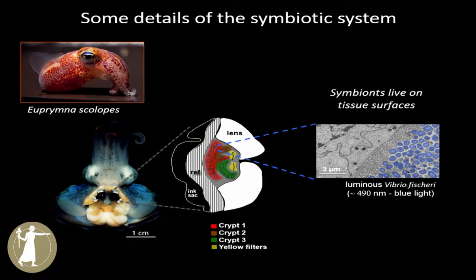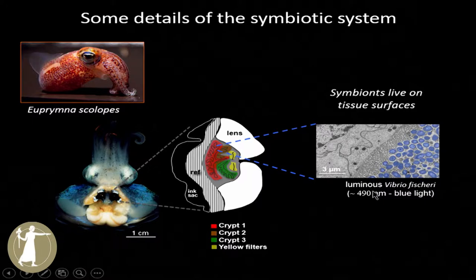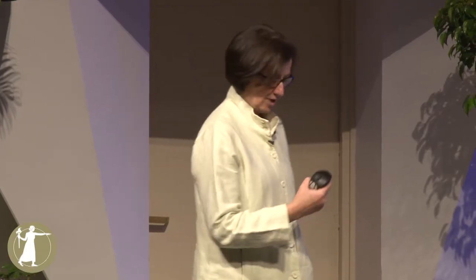These are the main stars of the show: Euprymna scolopes and its partner, Vibrio fisheri. Some details of this spectacular symbiosis — if you were to do a ventral dissection, you would see that the squid has a complex bilobed light organ in the center of the mantle cavity. Each lobe in the very center contains a set of epithelial tissues that harbor a pure culture of the luminous bacterium Vibrio fisheri. To maintain gram-negative bacteria along the apical surfaces of epithelia is perhaps the most common way that animals associate with bacteria, and very highly conserved processes direct this behavior.